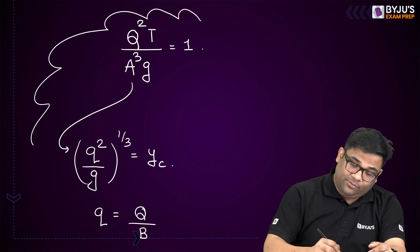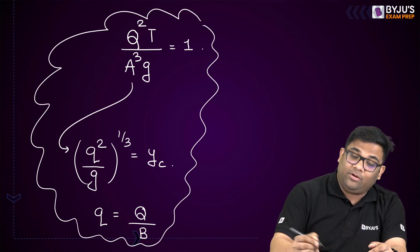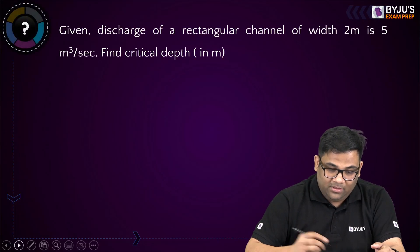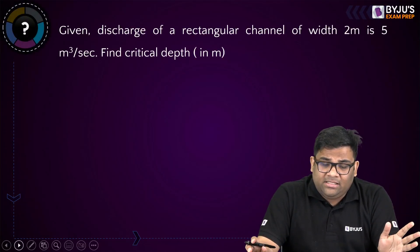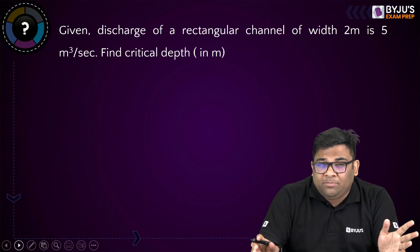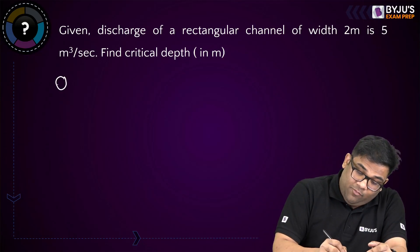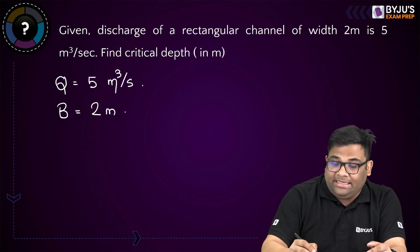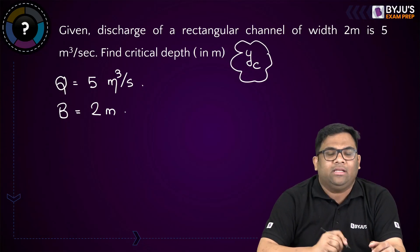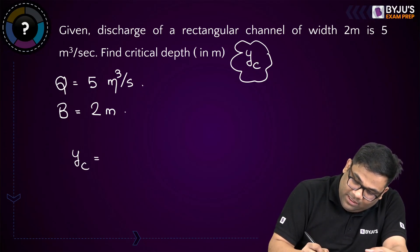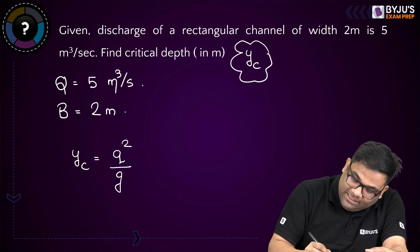This is a very important equation and many questions are asked from critical flow in a rectangular channel. Let us solve one question. Given: a rectangular channel of width B equals 2 meters, and discharge Q equals 5 cubic meters per second. They are asking for the critical depth. The expression for Yc is (q squared by G) to the 1/3.